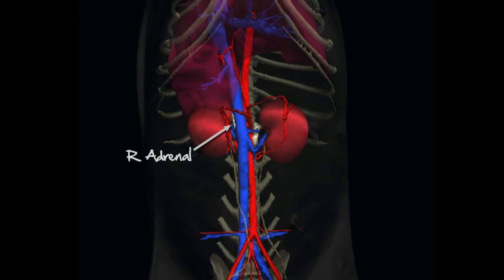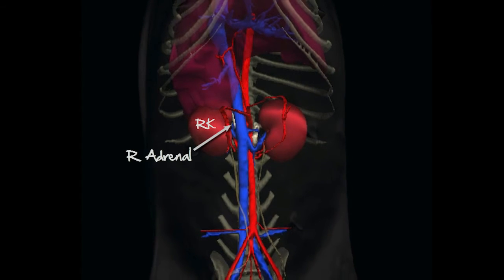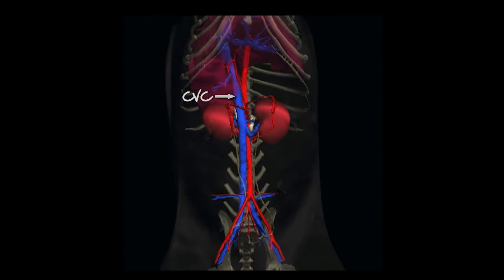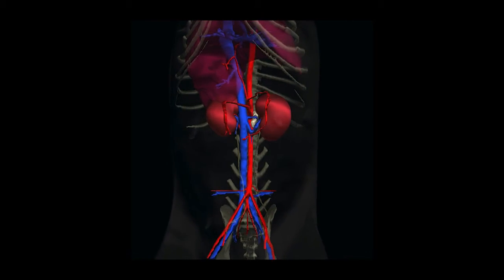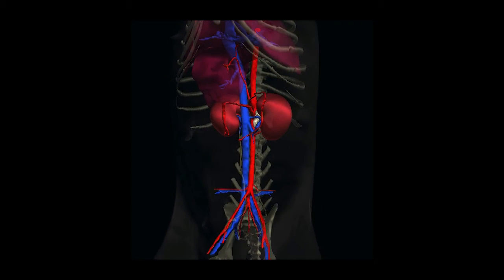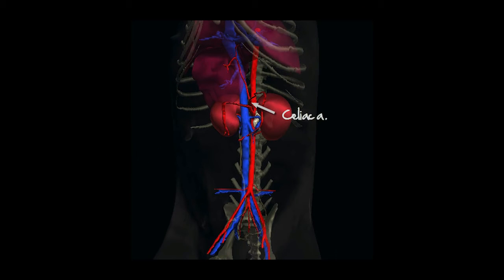The right adrenal is slightly more cranial and dorsal, and medial and dorsal to the right kidney, just lateral and dorsal to the caudal vena cava. The cranial mesenteric and celiac arteries branch off from the aorta just cranial to the left adrenal. The celiac artery, which is closest to the gland, branches into the splenic and hepatic arteries.